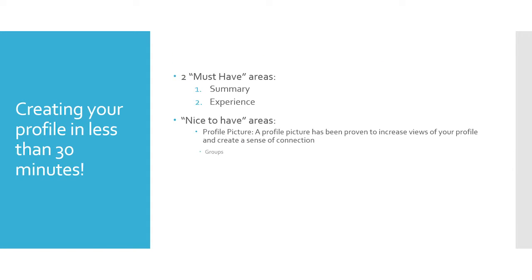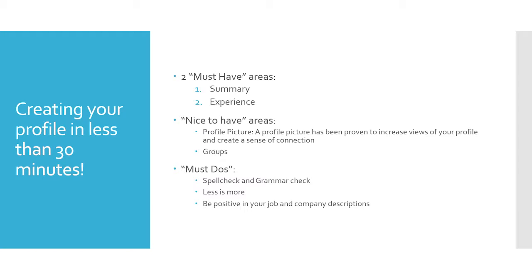When creating your profile, there are three distinct areas to pay attention to. The first is the must-have areas. One would be the summary, where you highlight your career and accomplishments and speak about jobs you would typically hire for. The next would be experience — have at least your current role listed with a description of what you do within the department or agency you work for, and some things you like about working for the State of Vermont. If it's been less than five years at the state, add at least one more job experience if possible.